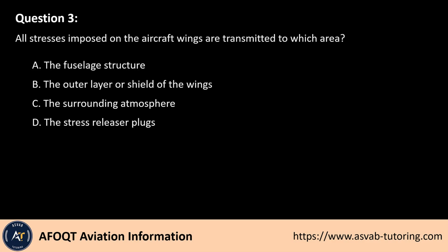Question 3. All stresses imposed on the aircraft wings are transmitted to which area? A. The fuselage structure. B. The outer layer or shield of the wings. C. The surrounding atmosphere. D. The stress releaser plugs.